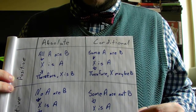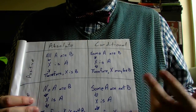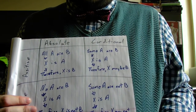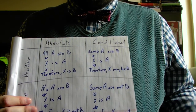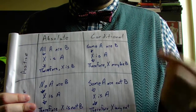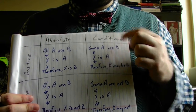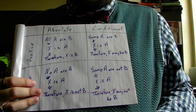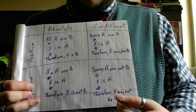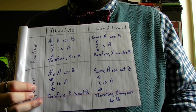Conditional syllogisms allow for exceptions to the rule. A positive conditional would be: some A are B, X is A, therefore X may be B — allowing that some A are not B. Comparably, a negative conditional would be: some A are not B, X is A, therefore X may not be B. So X may be B, but it may not be B, and the conclusion we're drawing is that it may not be B.